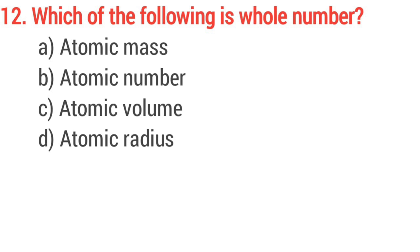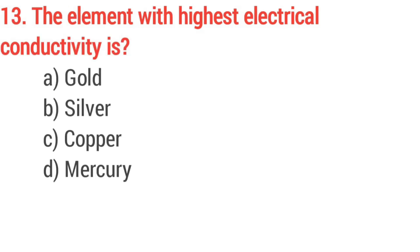Question number 12. Who is with the flowing hole number? Option B, atomic number. Question number 13, the element with highest electrical conductivity is? Answer option B, silver.